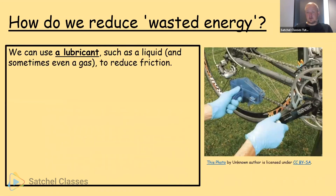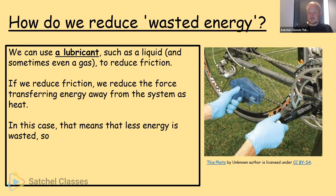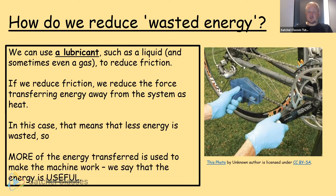For mechanical systems we can use a lubricant — a liquid or sometimes a gas — to help reduce friction. If we reduce friction, we reduce the force that transfers energy away from the system as heat, meaning less heat is lost and less energy is wasted. More of the energy transferred is then used to make the machine work — we say that the energy is useful. That's why oiling a rusty bike makes it easier to ride.